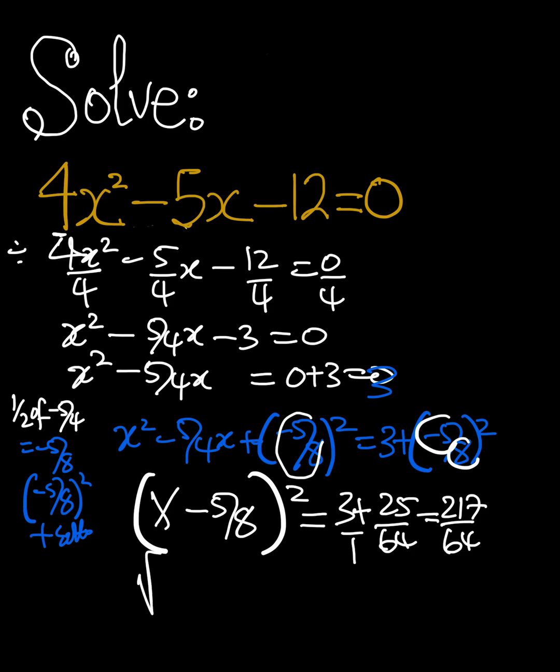Now, we're going to take the square root of x minus 5 over 8. And we're also square root the 217 over 64.